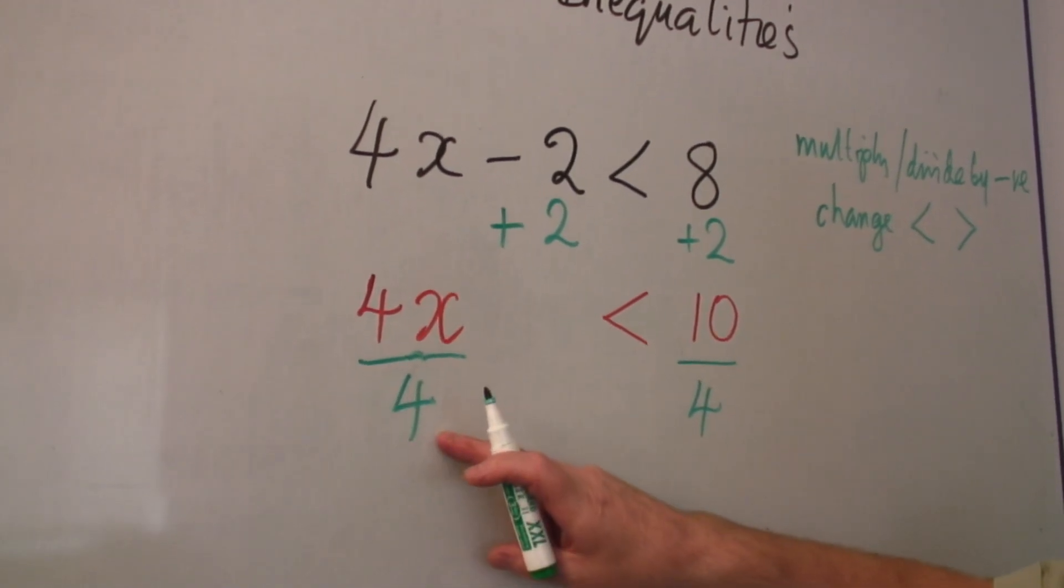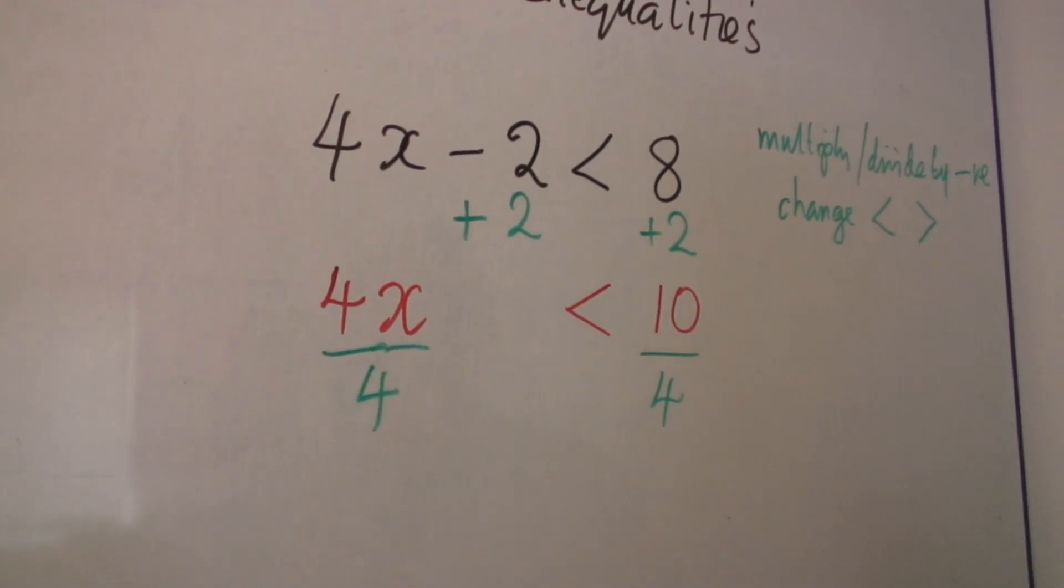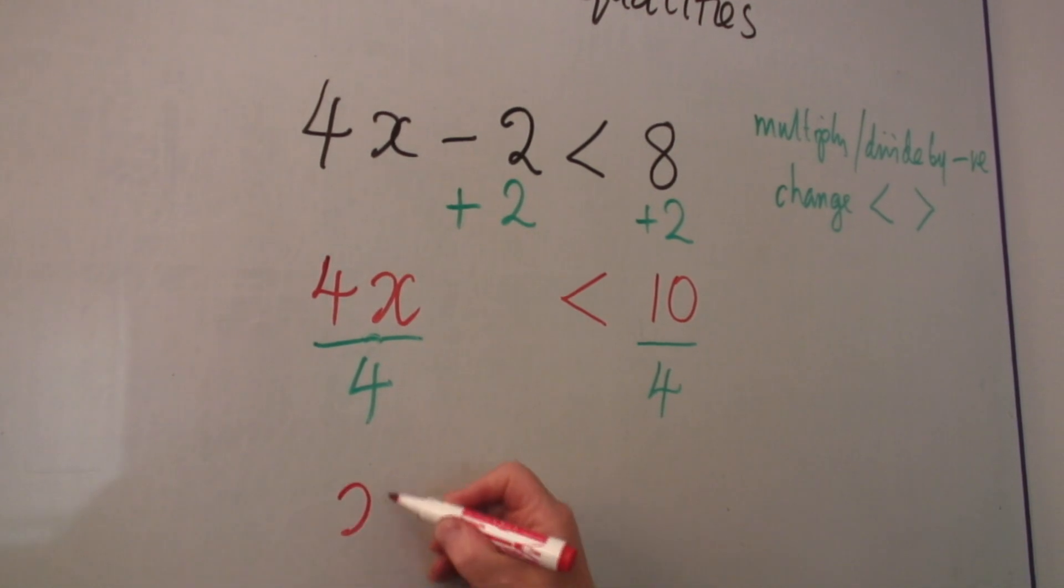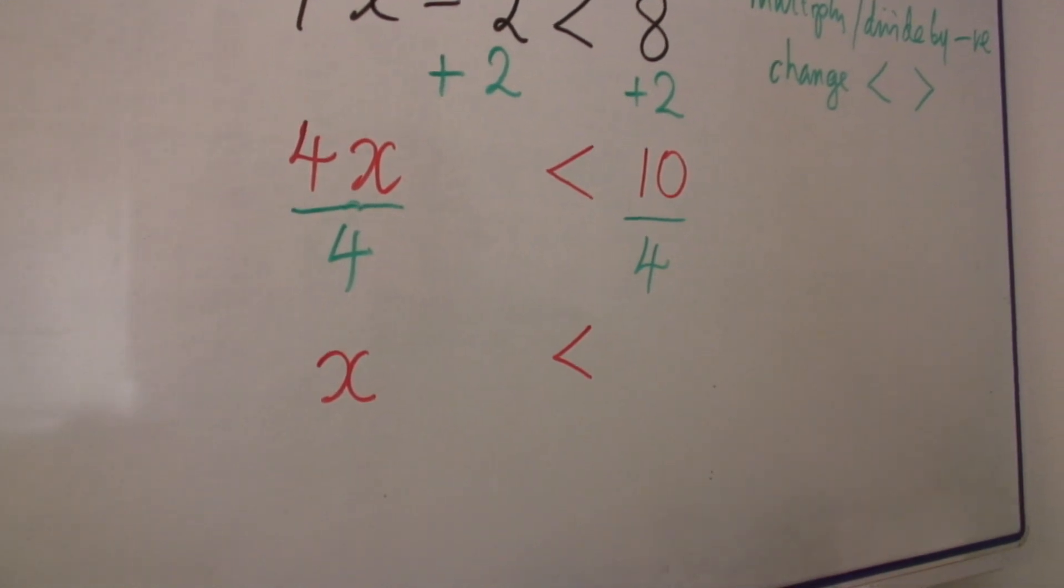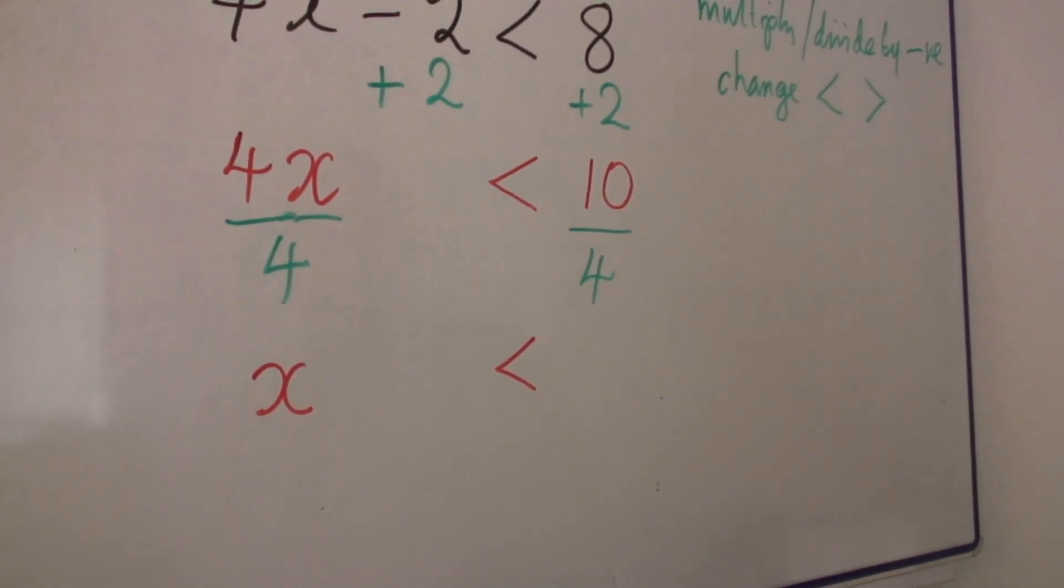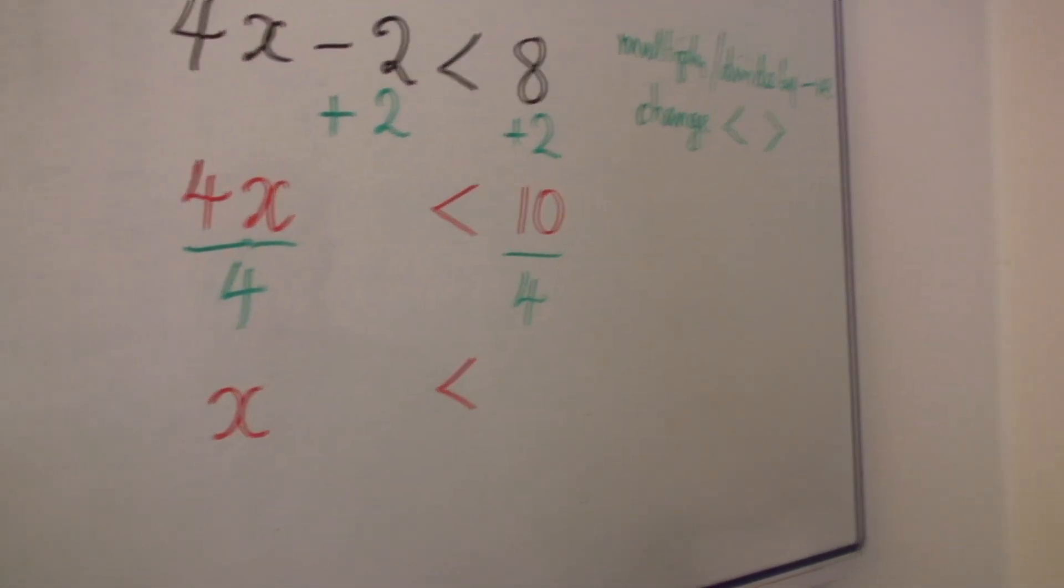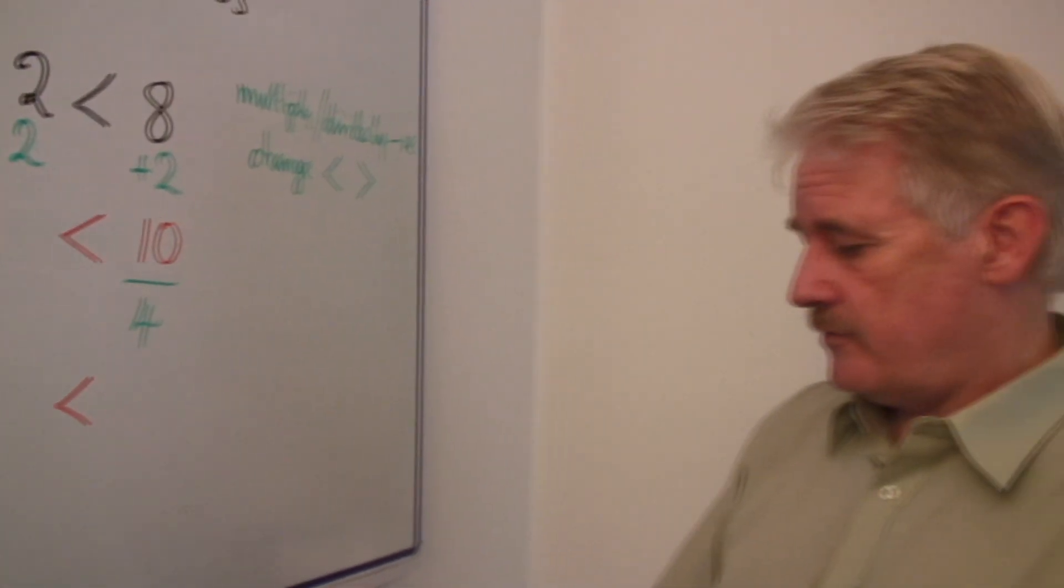So 4x divided by 4 will just give me a plain x. I've still got less than, and I've got 10 divided by 4. Or 2 fours are 8, so that's 2.5 or 2 and a half.